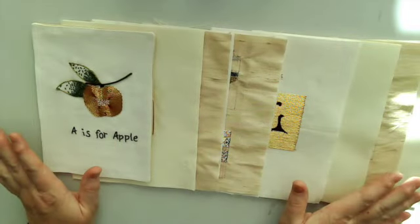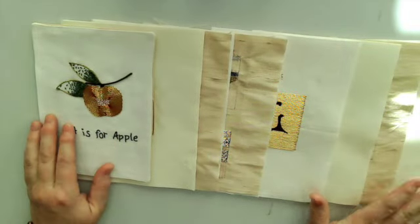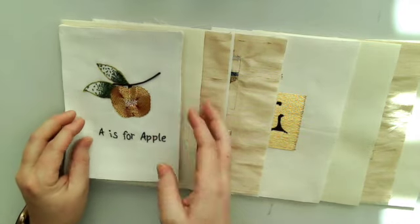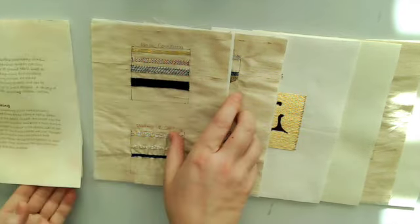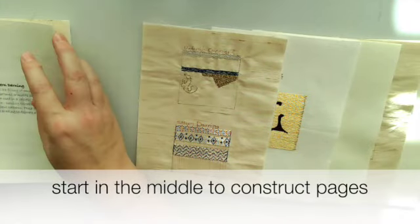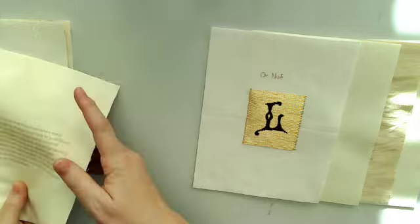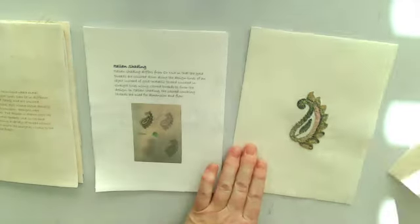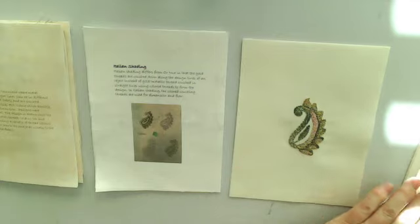Now that I have my layout complete and I know the order of all of my pages it's time to start putting them all together. So what I'm going to do is I'm going to start in the middle and then I'm going to work to the front and then to the back. I'm going to start with my Ornway page and my Italian shading page.